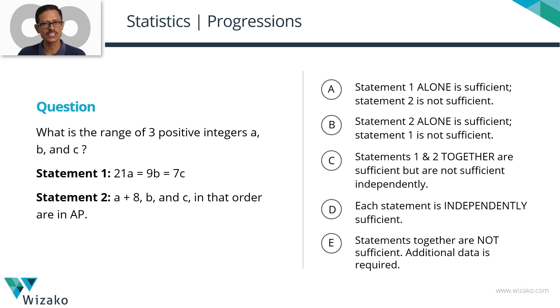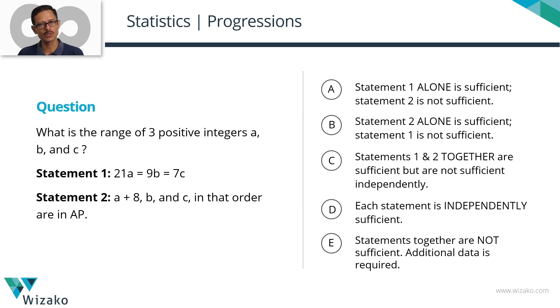This question is a GMAT data-sufficiency sample question, medium difficulty. It combines concepts in two topics: statistics and progressions. We can classify this question as somewhere around a 650 to 700 level question.